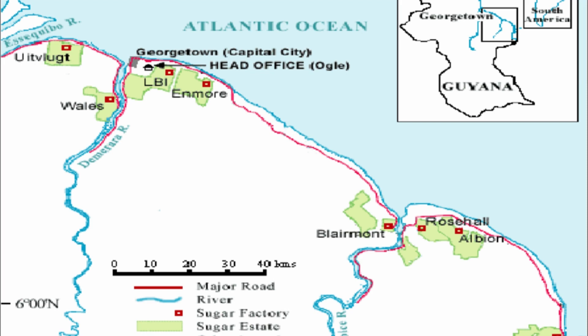Since most of the land area of Guyana is covered in forests and a portion in savannah vegetation, most development is concentrated along the coast. This is also where the state-owned sugar company Guysuco carries out sugarcane cultivation. The area benefits from the availability of labour, local market, closeness to roads, rivers, alluvial soil, and ports.